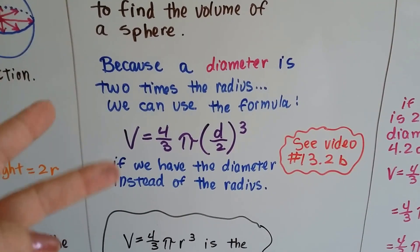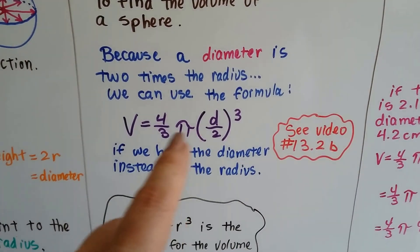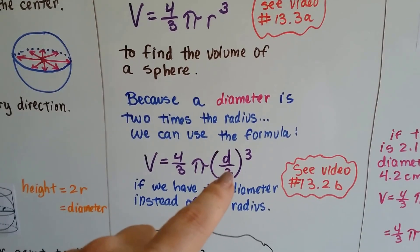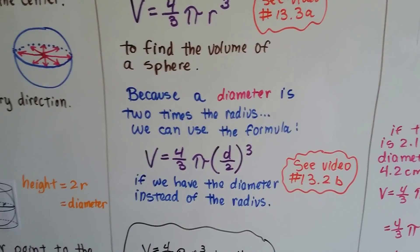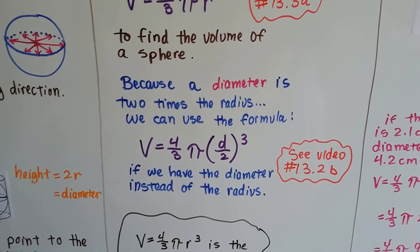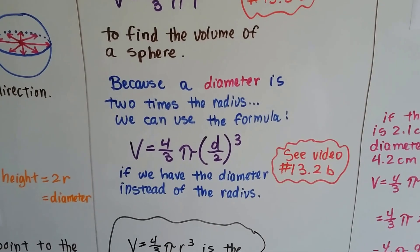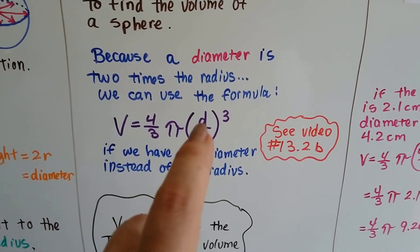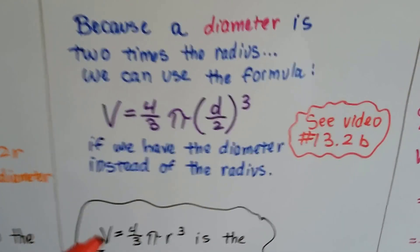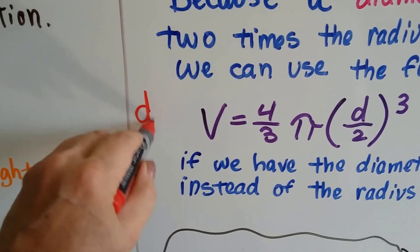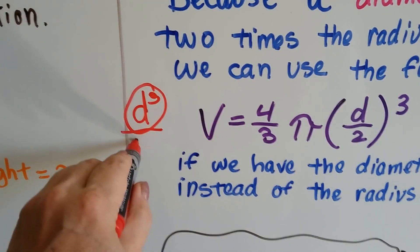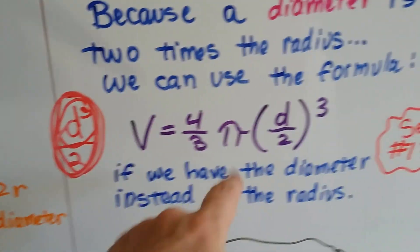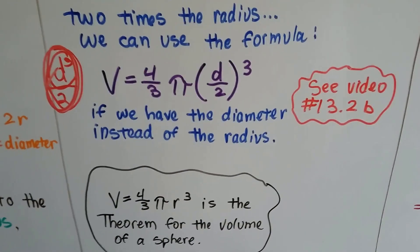Now, because diameter is two times the radius, we can use the formula just like this one. Instead of radius, we can put diameter divided by two and then put it in parentheses with the cubed on the outside. Now, if you don't understand about this, you need to see video 13.2b, and there'll be a link for this one in the description of the video you're watching. So, if we have the diameter instead of the radius, we can do this. So, real quick explanation. The reason it's in parentheses is if we didn't have it in parentheses, that means we would be cubing the diameter and not the two that we're dividing it by. We need to cube the entire thing so we put it in parentheses. If you don't understand, you really need to watch that video.